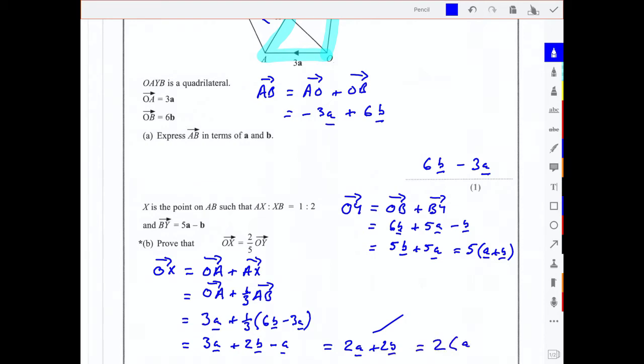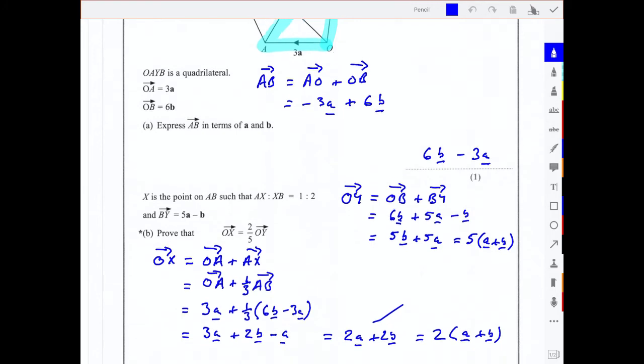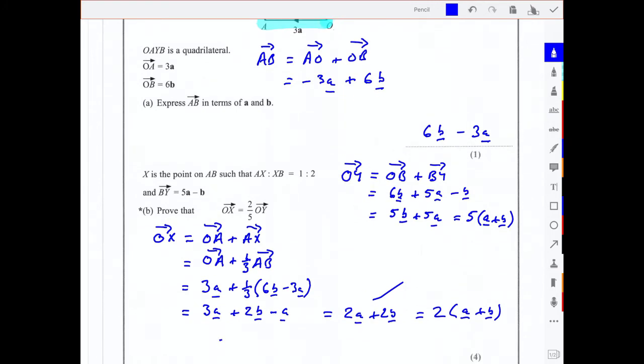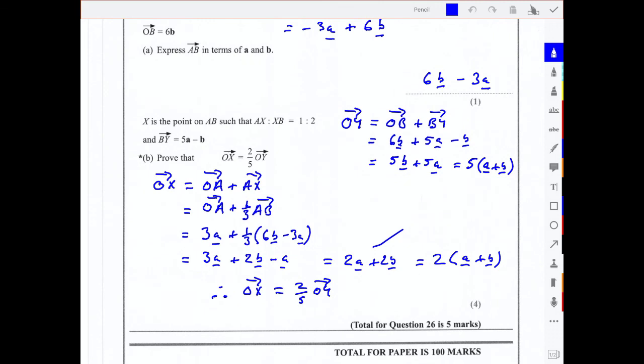Which is 2 lots of a plus b. And now we can see it clearly, we've got 2 lots of a plus b and 5 lots of a plus b. So OX therefore is 2 fifths of OY. 1 fifth of OY would be a plus b, so 2 lots of a plus b is 2 fifths, and that completes the question.